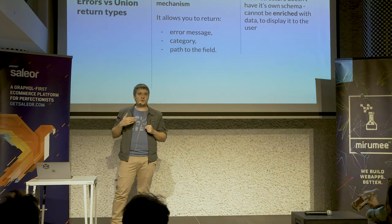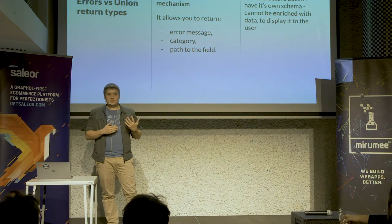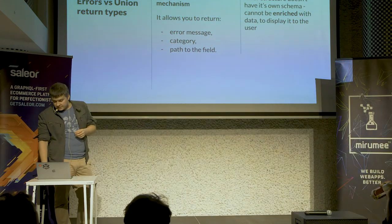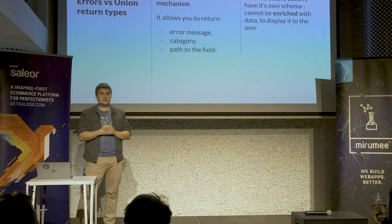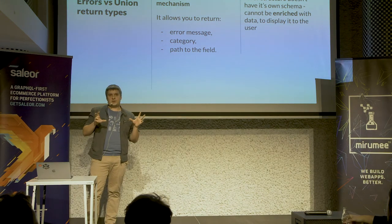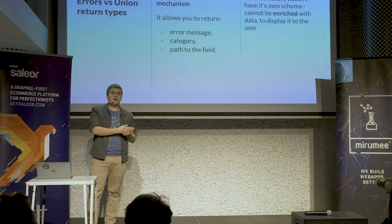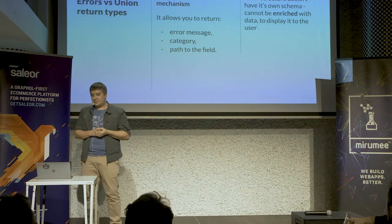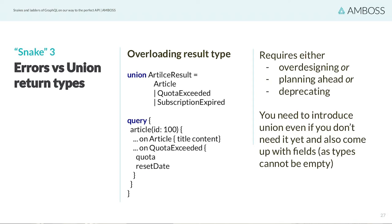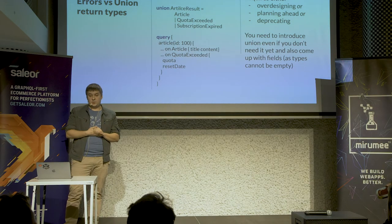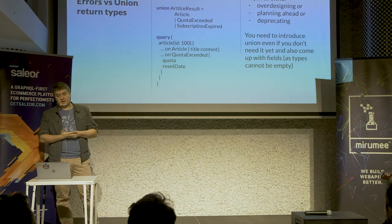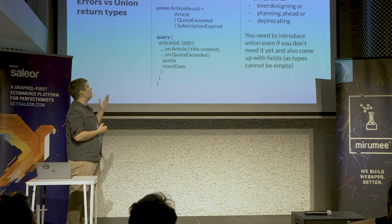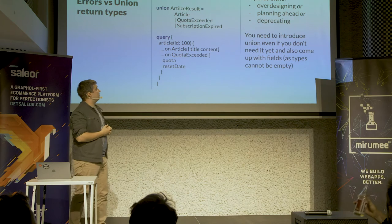For example, if a user cannot be read, the question is why — maybe it's missing, maybe it's banned, maybe it just blocked you as in a social network. For this we use an approach of union return types: instead of returning an exact type, you return a union with a regular type representing successful handling and some error types providing additional information about why the request wasn't successful. For instance, instead of just returning an article by ID, we return an ArticleResult, which is a union of the Article type and two potential errors. One example error is QuotaExceeded — if you have limited access to content and your subscription has expired.